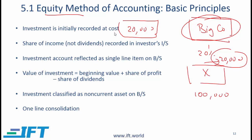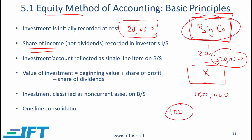Let's say that during the year company X has a total net income of 100. What big company will do on its income statement is show its own share of income — not the dividends. If the total income for X was 100, then 20% of 100 is 20, and this is the number that will be shown on big company's income statement as income coming from the associate.